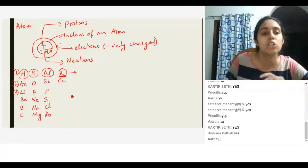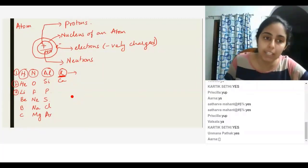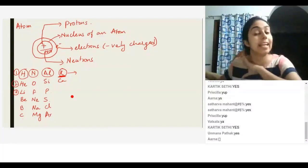So hydrogen has an atomic number one, helium has an atomic number two, lithium has an atomic number three, and so on till 118.